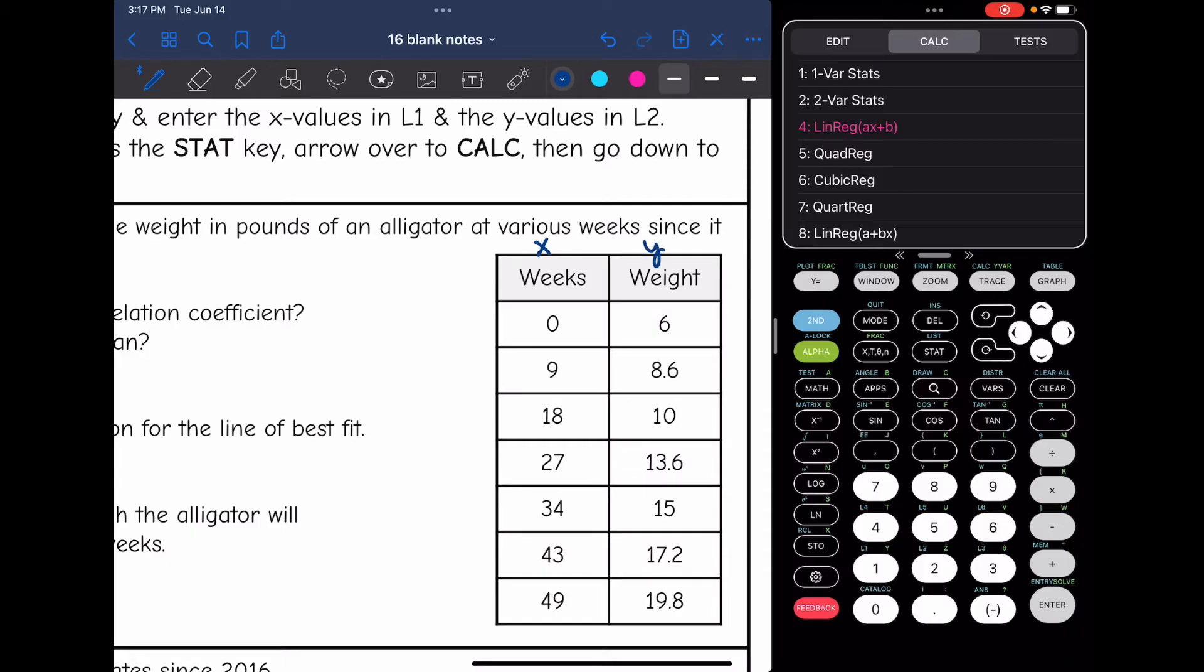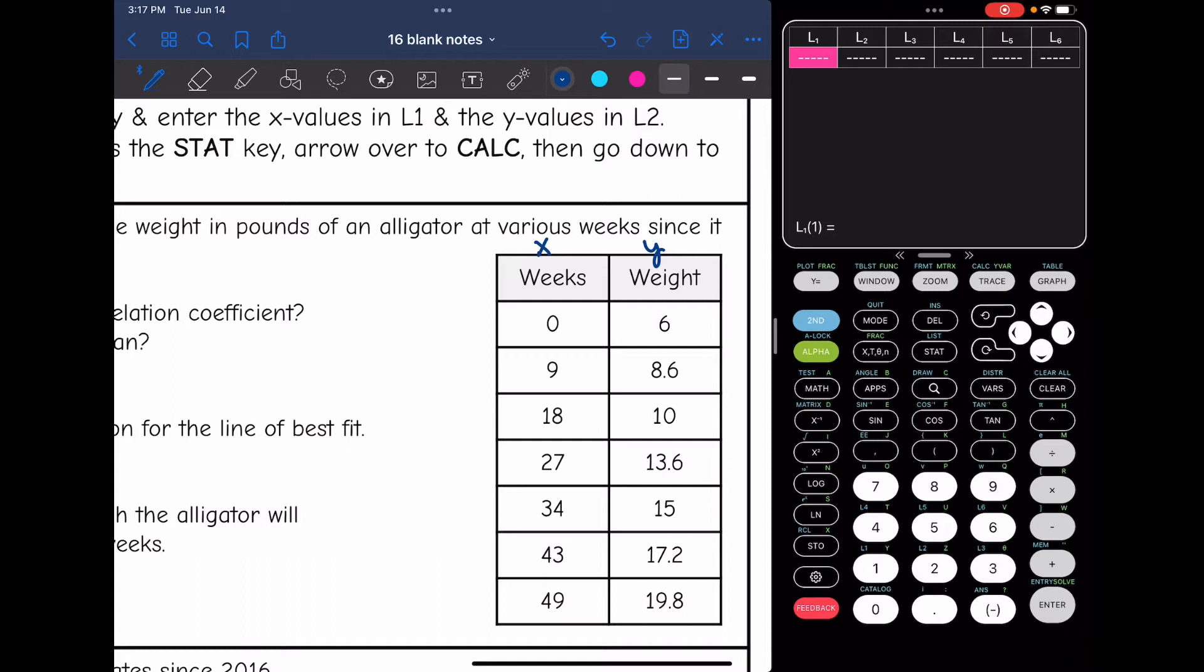The way we get to enter this into the calculator is by clicking the stat key. Let's go ahead and go back to home. Second quit. Okay, so stat key, enter, and then in L1 is where I'm going to put all of the x values. So 0, 9, 18, 27, 34, 43, and 49.